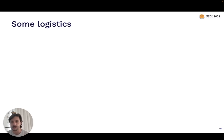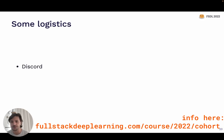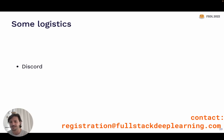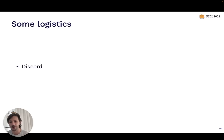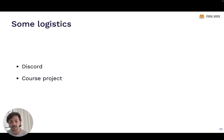Some logistics before we dive in. If you're part of the synchronous cohort, all communication will happen on Discord — if you're not on it, please reach out so we can get you on. If you're not checking Discord regularly, there's a high likelihood you'll miss some of the value of the synchronous course. We will have a course project again for folks participating in the synchronous option, with more details shared on Discord in the coming weeks.